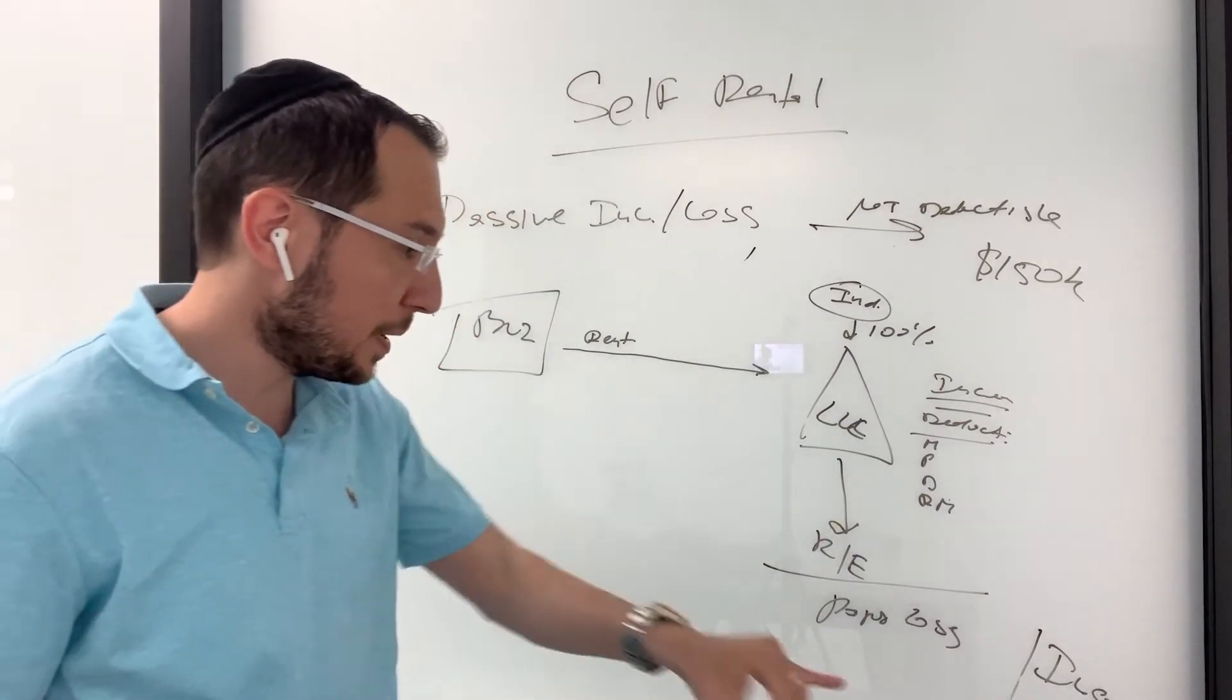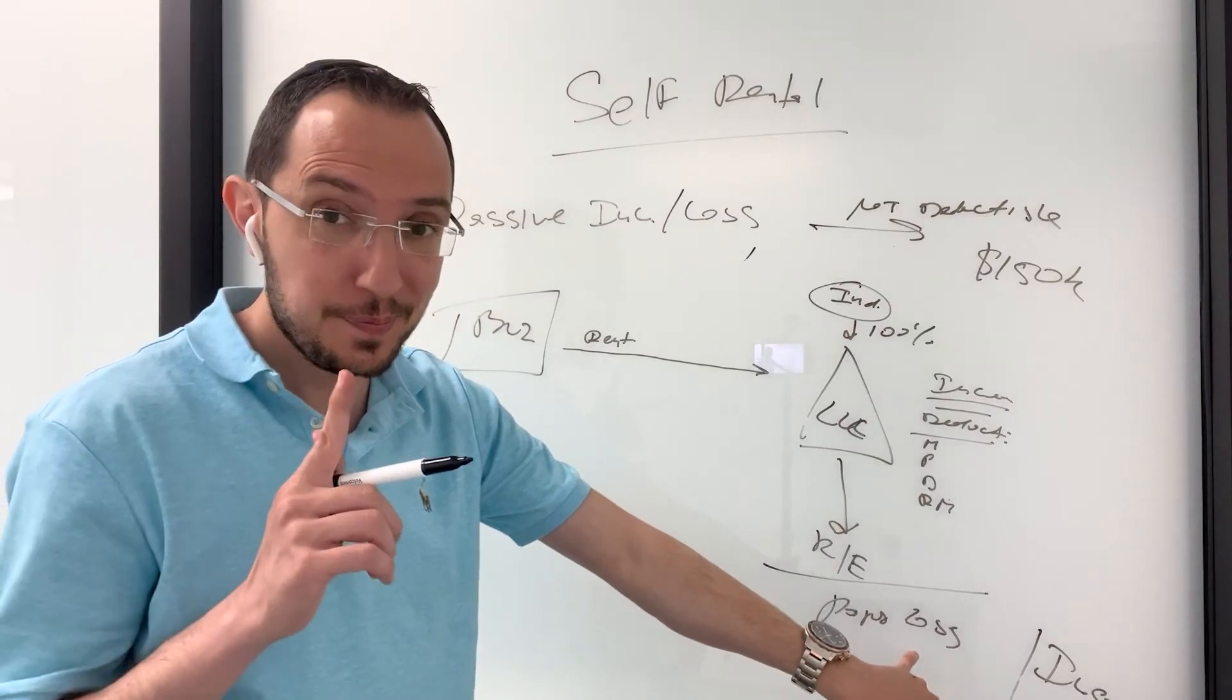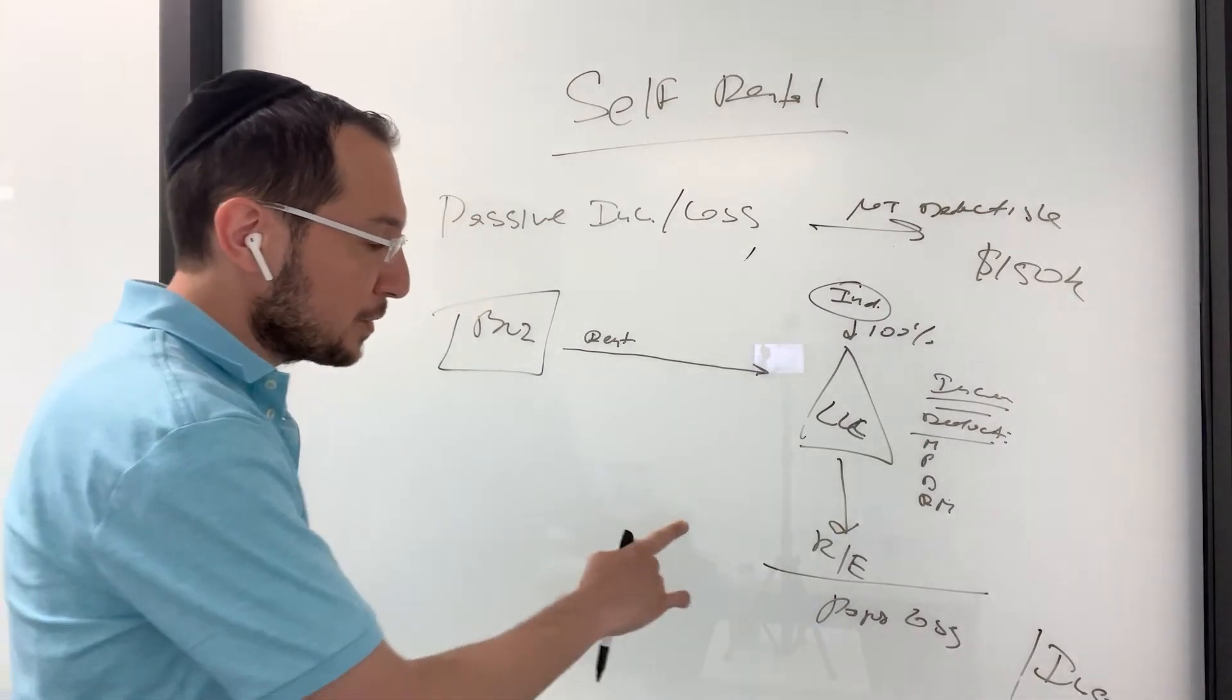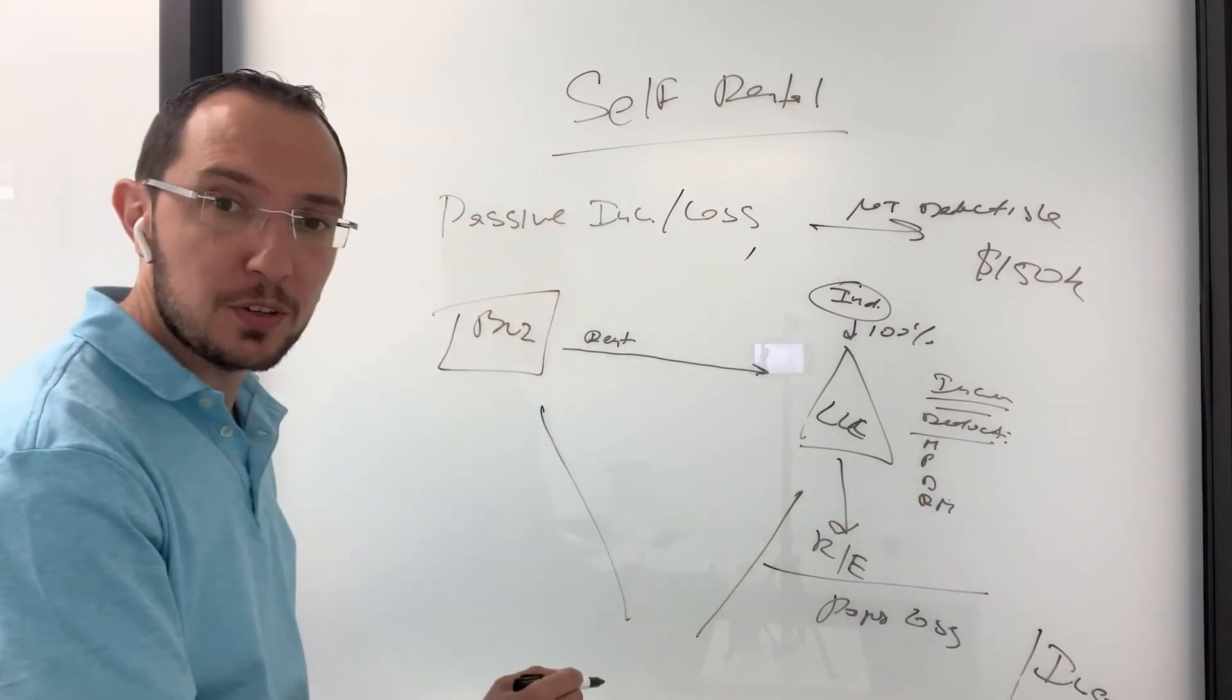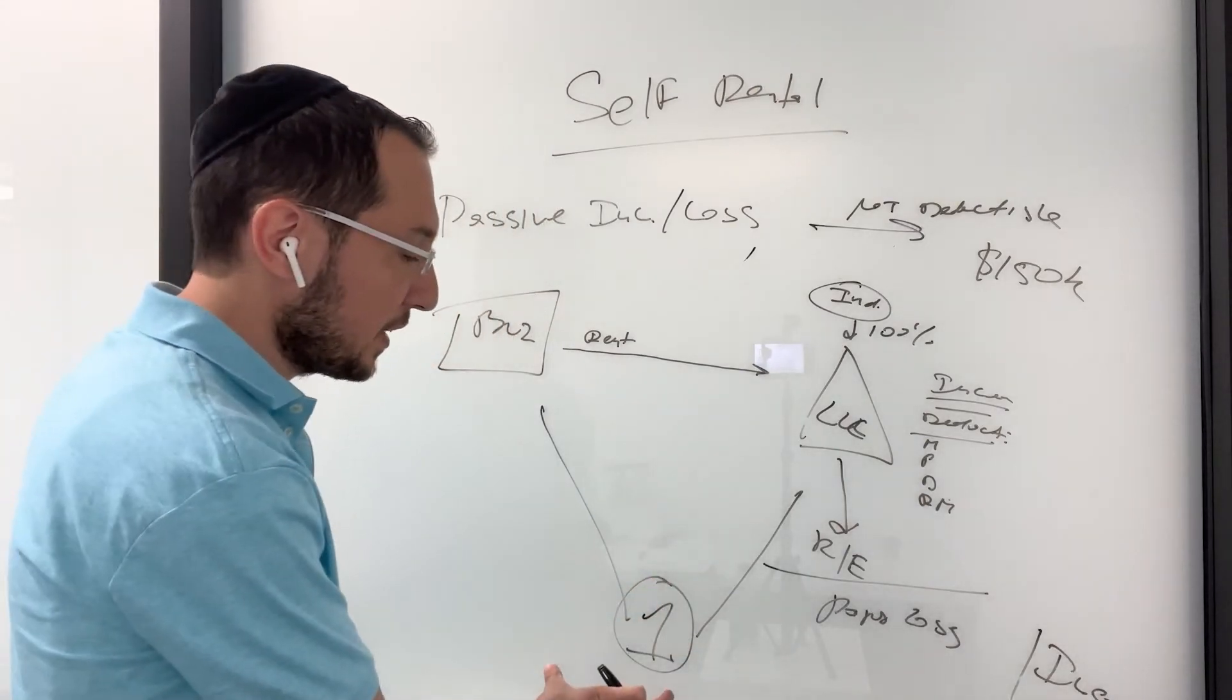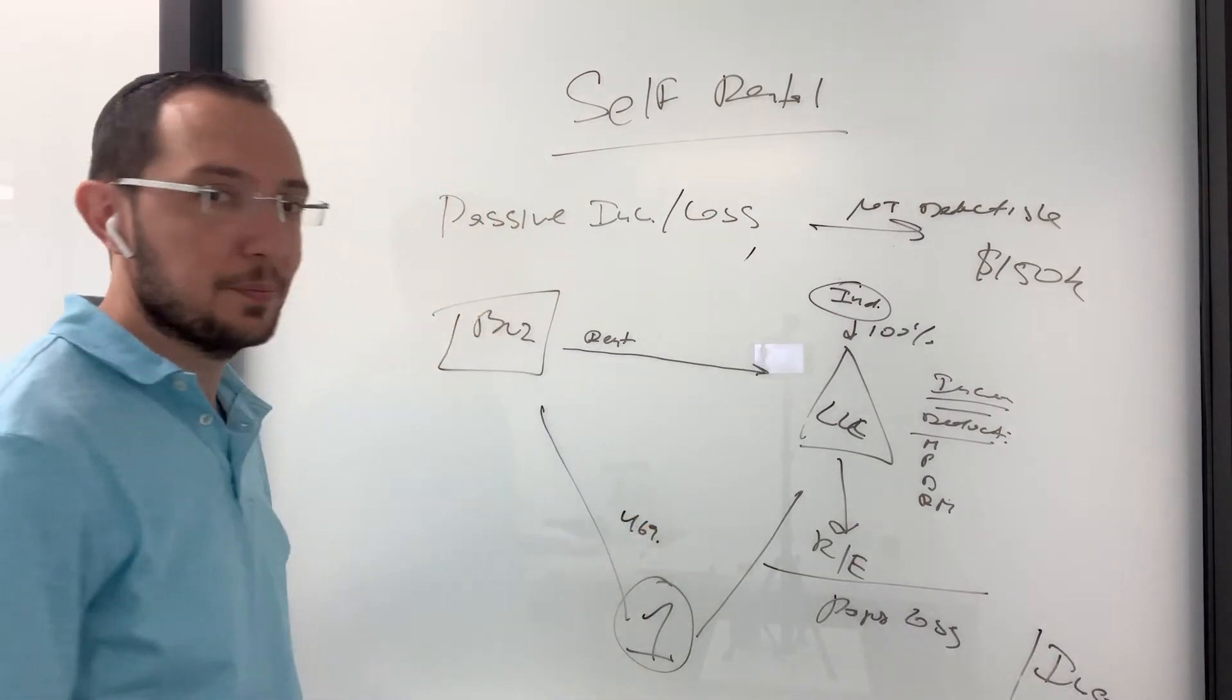Now, when can you make your loss deductible? I'll tell you why. IRS actually allows you, it's so funny, it allows you to group these two activities together. Can you see it on my board? Yes. Two activities together as one activity, as one activity under section 469.